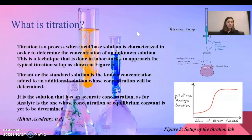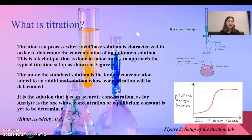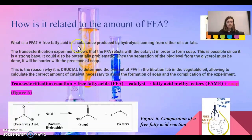Titration is a process used to determine the concentration of an unknown solution. There are two parts in the titration process. The first one is the titrate, which is the standard solution that we already know the concentration of. As for the analyte, that is the concentration we are looking for in the solution.